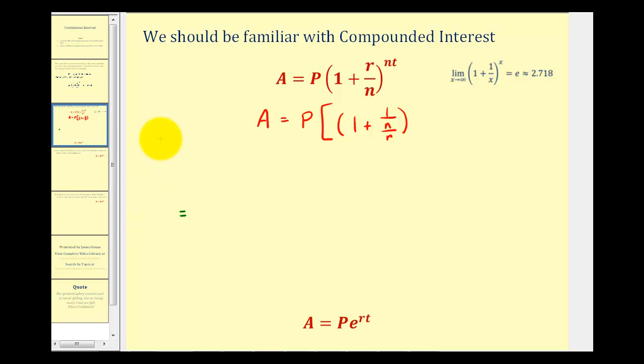Okay, now the next thing we're going to do is play around with some properties of exponents. Instead of raising this to the n times t power, we're going to raise this to the n divided by r power, and then we're going to raise this to the n times t. Remember when we have powers to powers, we multiply them, so let's make sure this product here would be n times t.